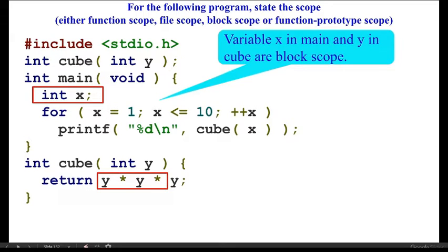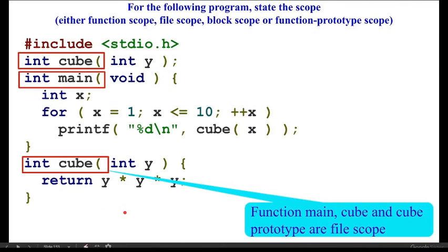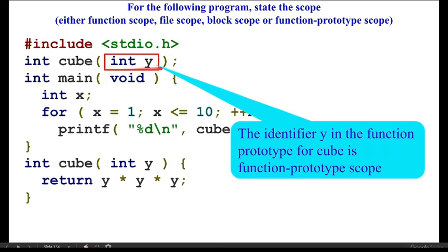To summarize the scope answers: variable x in main and variable y in cube are both block scope, because they are declared inside their respective functions. The functions main and cube themselves are file scope, as they are global to the program. The int parameter y inside the function prototype for cube is function prototype scope.